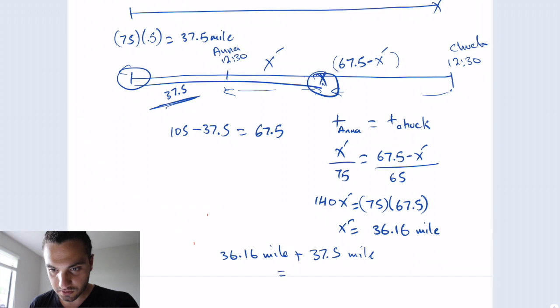So the answer will be, let's add them together. 37.5 plus 36.16, and this will equal to 73.66. All right, guys. Hope this helped. I'll be doing these questions. If you guys need any specific questions, just let me know. All right, peace out. Good luck.